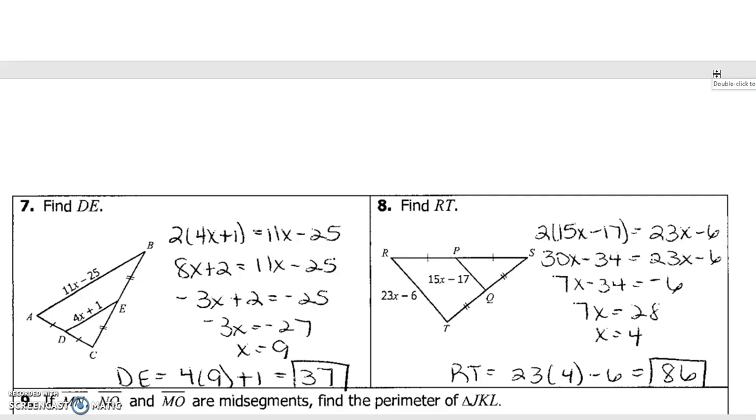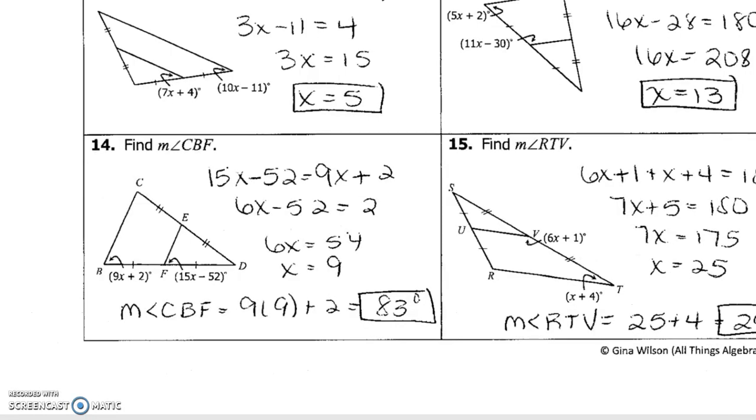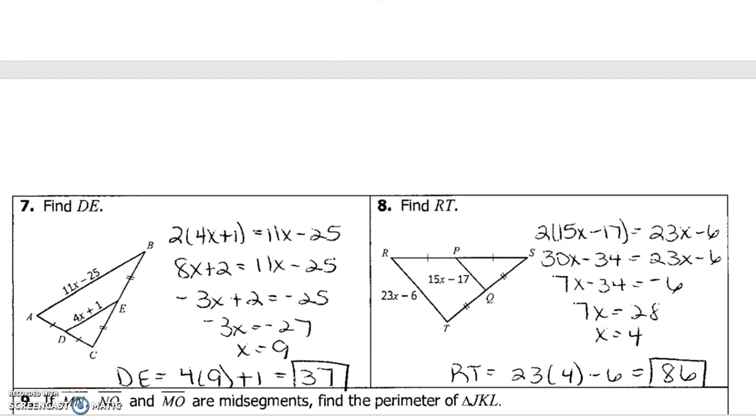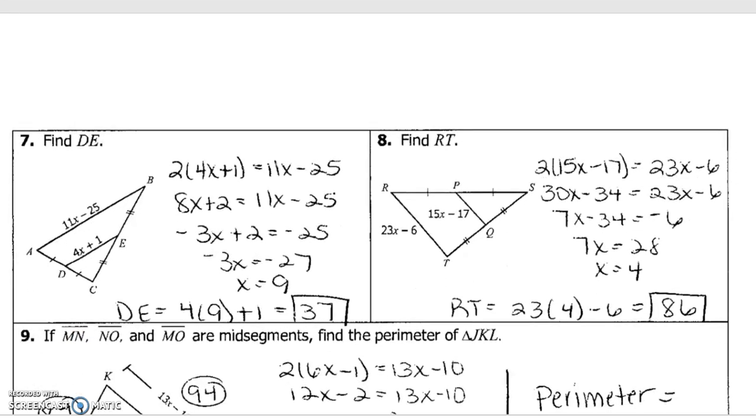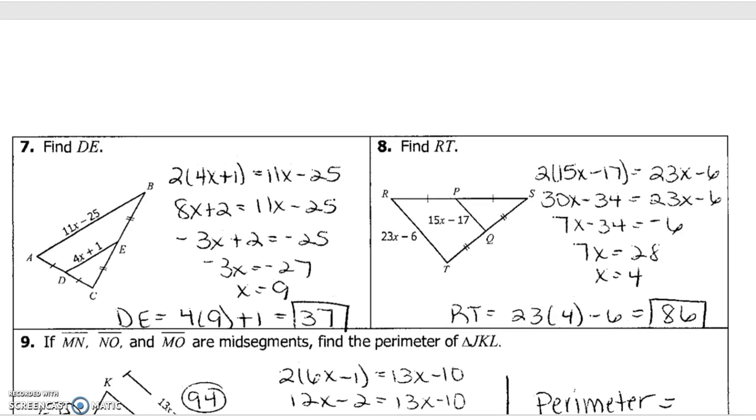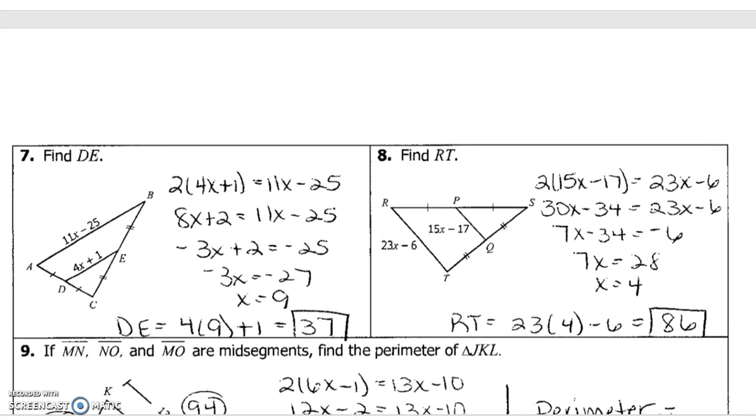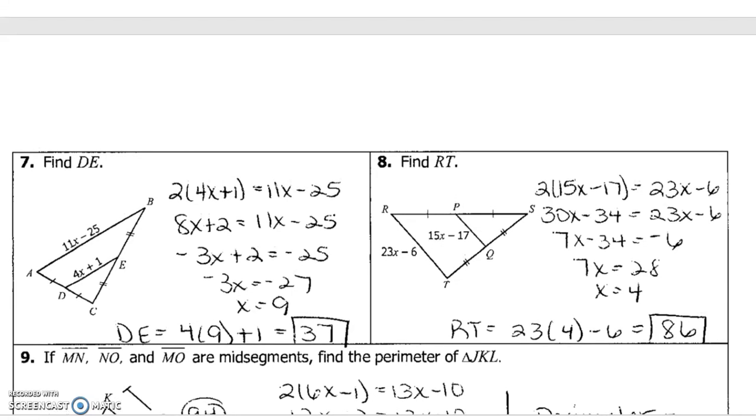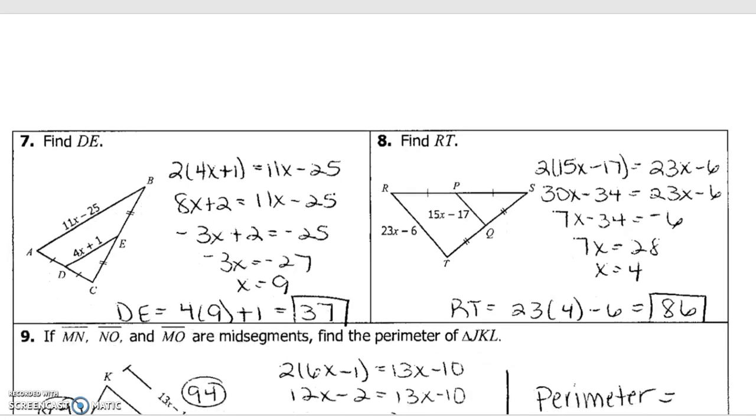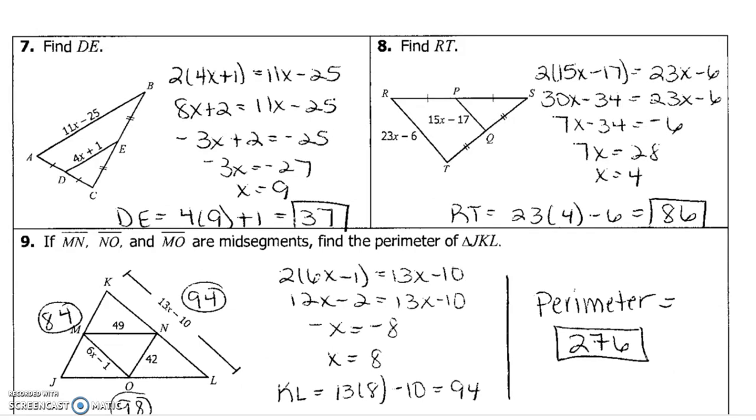Now the other one has an expression. So let's set it up. Two times the mid segment. So two times 6x minus one would equal the base. So it equals 13x minus 10. So find out what that measure is. So find x and plug it in. So K, L, you should have found out, was 94. So if we add all the sides together of the big triangle, what do we get? We should have gotten 276.